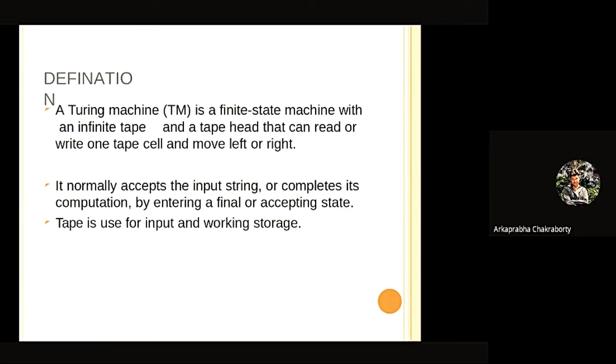Basically a Turing machine is a finite state machine with an infinite tape, which is basically like a sequence of inputs or an input of strings, which contains a 1 or a 0 or maybe a space. It normally accepts an input string and completes its computation by entering a final or accepting state. The tape is used for working storage and also input.